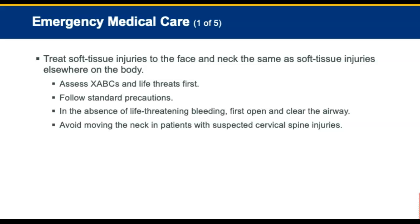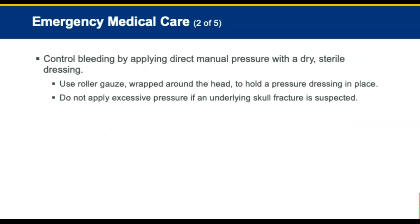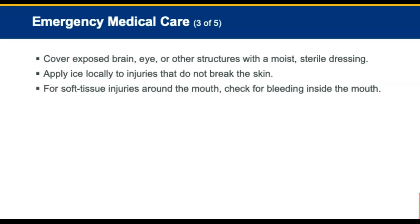Treat soft tissue injuries to the face and neck the same as soft tissue injuries elsewhere on the body. Assess the XABCs and life threats first. Follow standard precautions. In the absence of life-threatening bleeding, the first step is to open and clear the airway. Avoid moving the neck in patients with suspected cervical injury. Control bleeding by applying direct pressure with a sterile dry dressing. Use roller gauze wrapped around the circumference of the head to hold the pressure dressing in place. Do not apply excessive pressure if there is a possibility of an underlying skull fracture. When an injury exposes the brain, eye, or other structures, cover the exposed parts with a moist sterile dressing. Apply ice locally to injuries that do not break the skin.